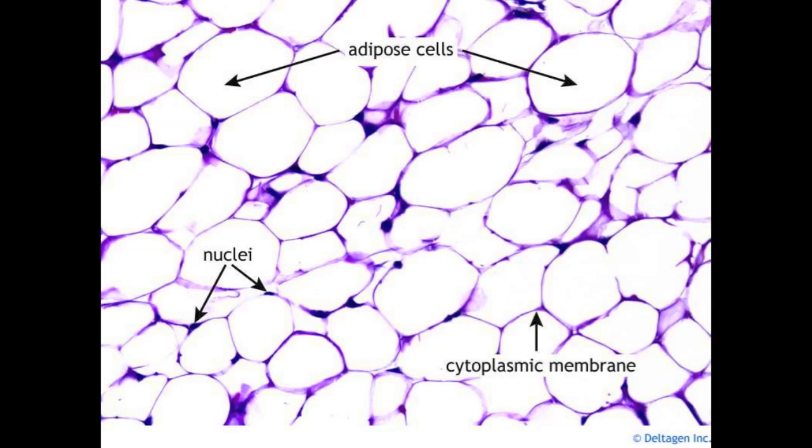Most fats are stored in the body in what is called adipose tissue. It's basically fat cells that have a nucleus, a little bit of a membrane, and then a whole bunch of fat that's stored in the middle of it.